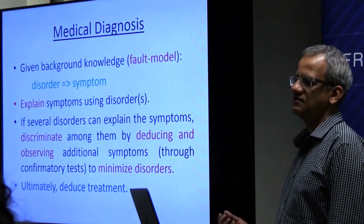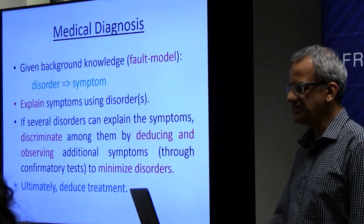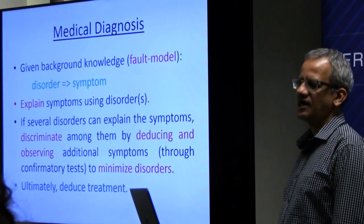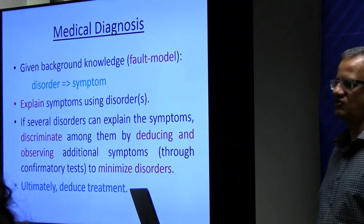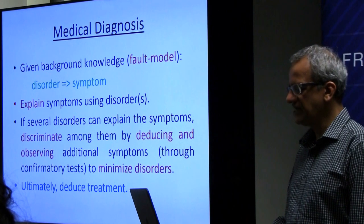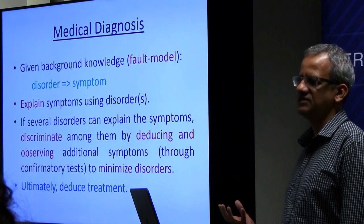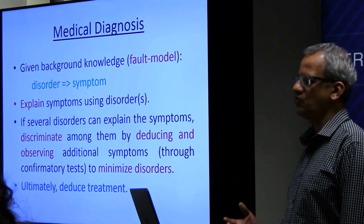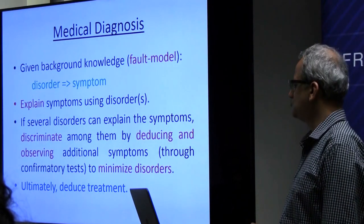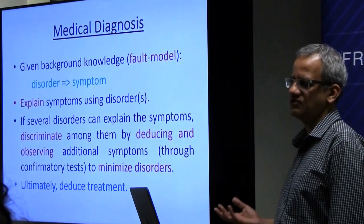Once you have that information, you look at the symptoms and figure out what are the possible causes that could have led to these symptoms. That particular kind of reasoning is what we call abductive reasoning — we generate explanations from concrete observations. When we have multiple candidate disorders, we look at each and find other consequences of that hypothesis to disambiguate, which requires deduction.